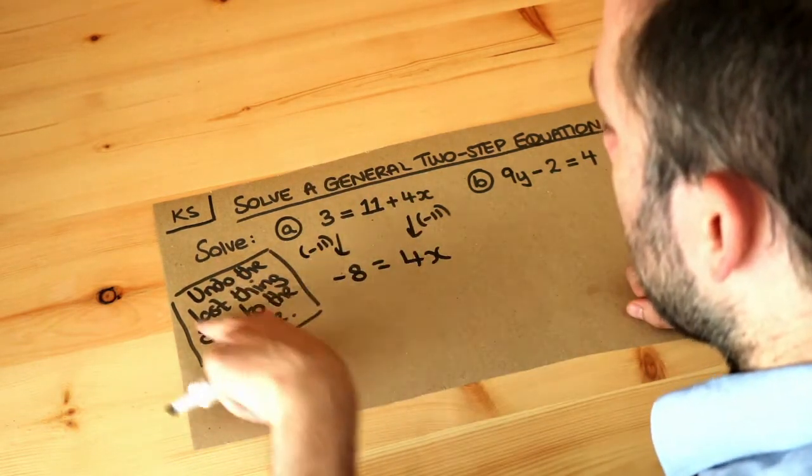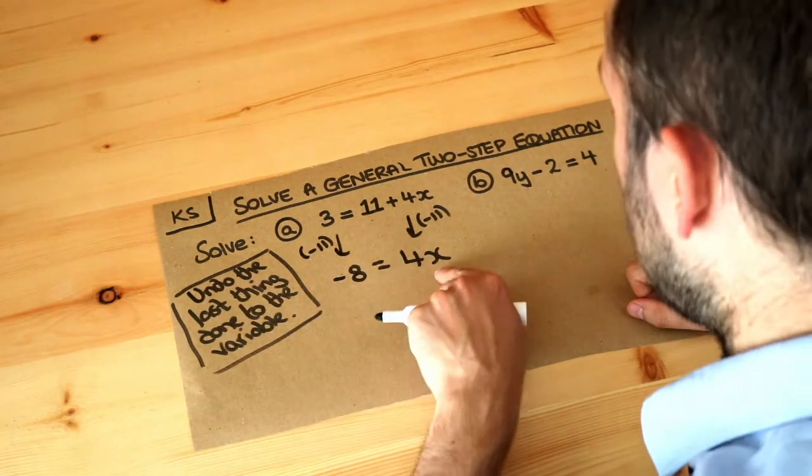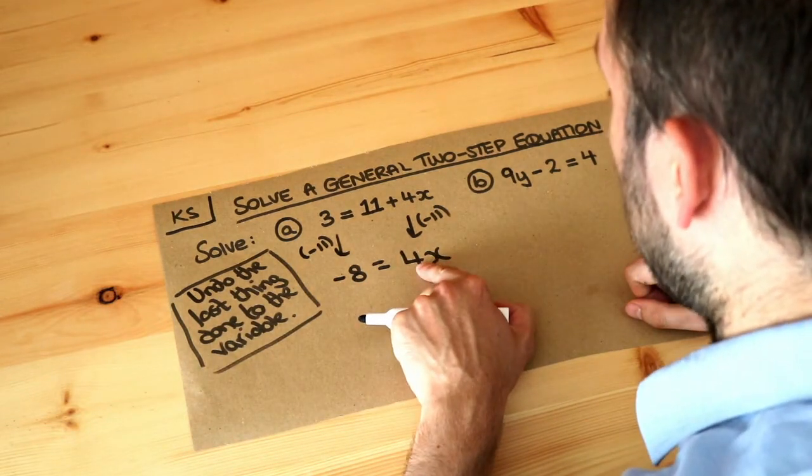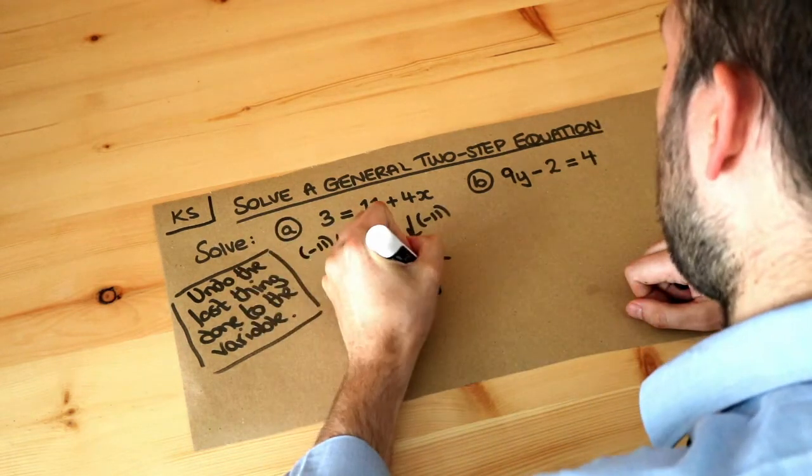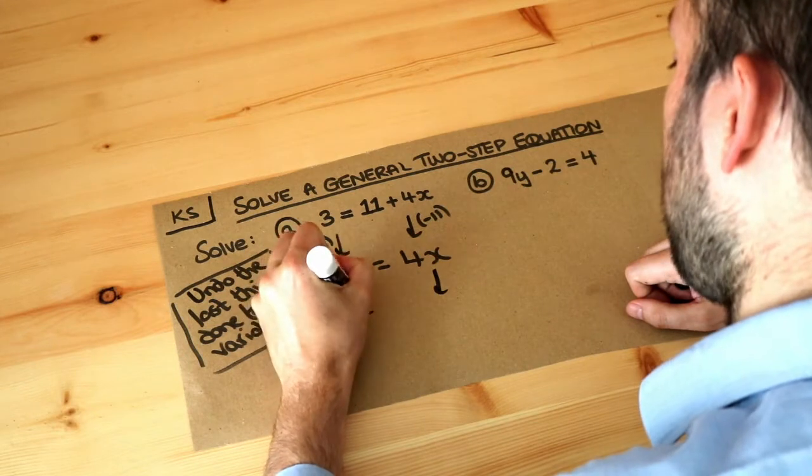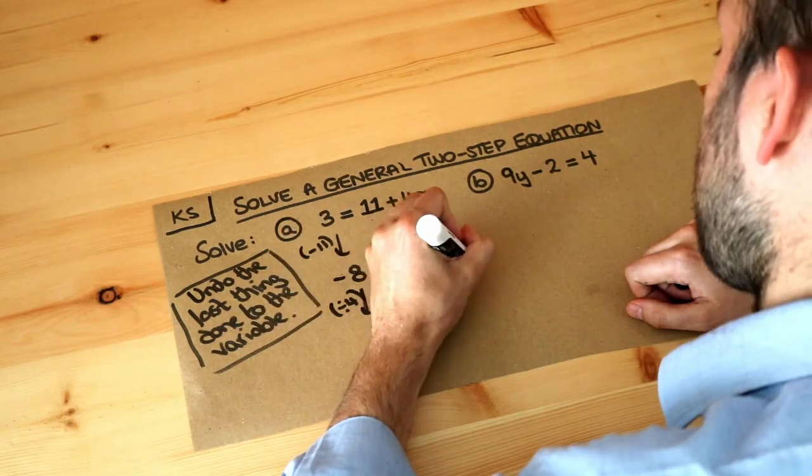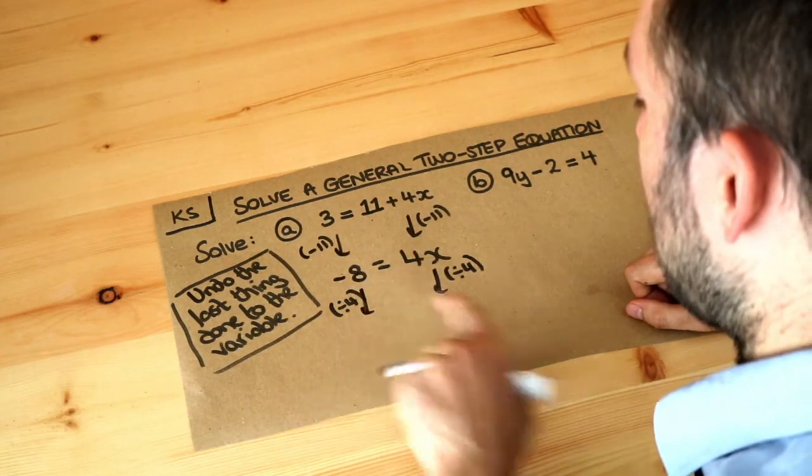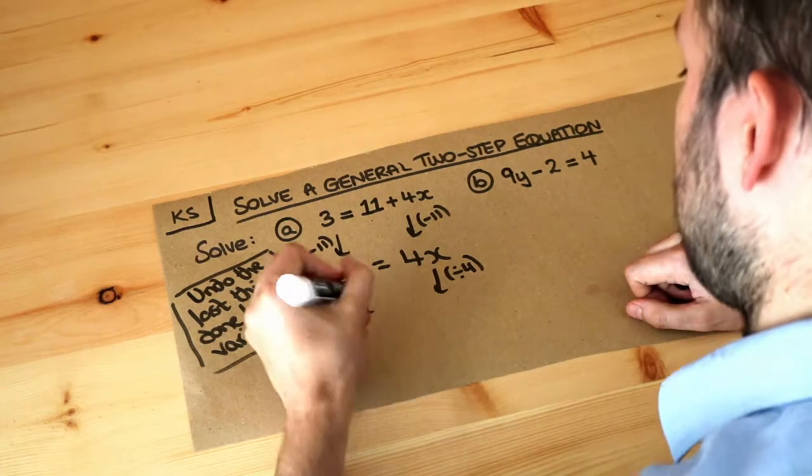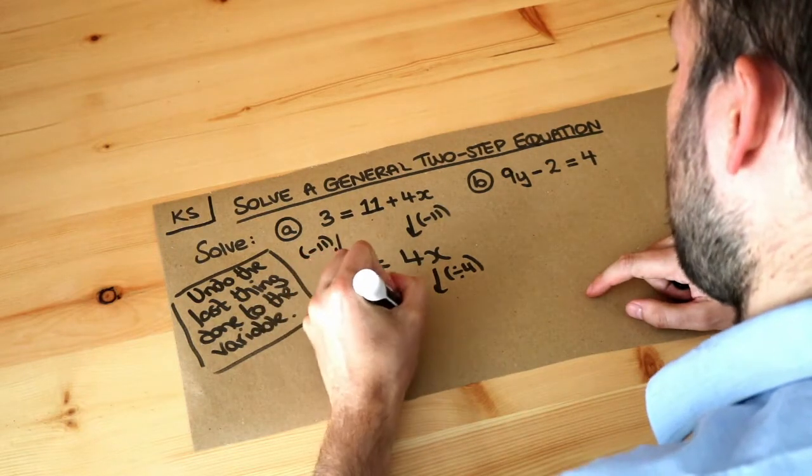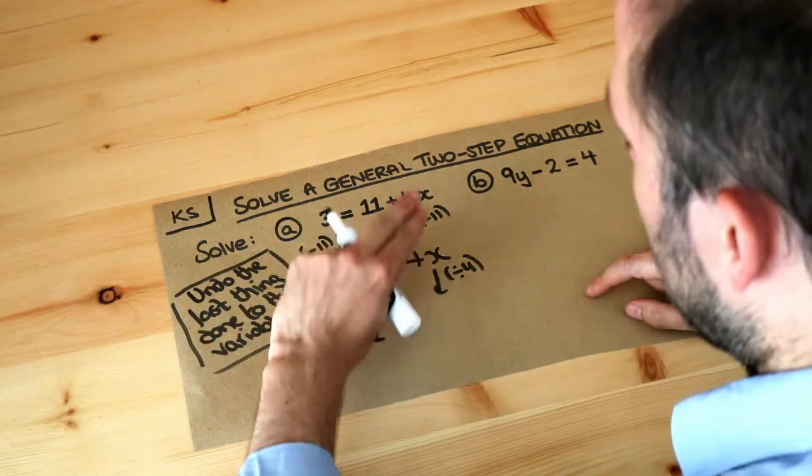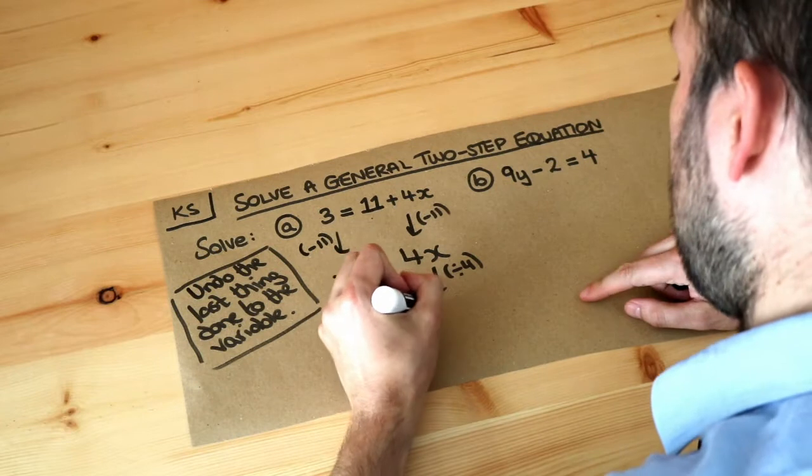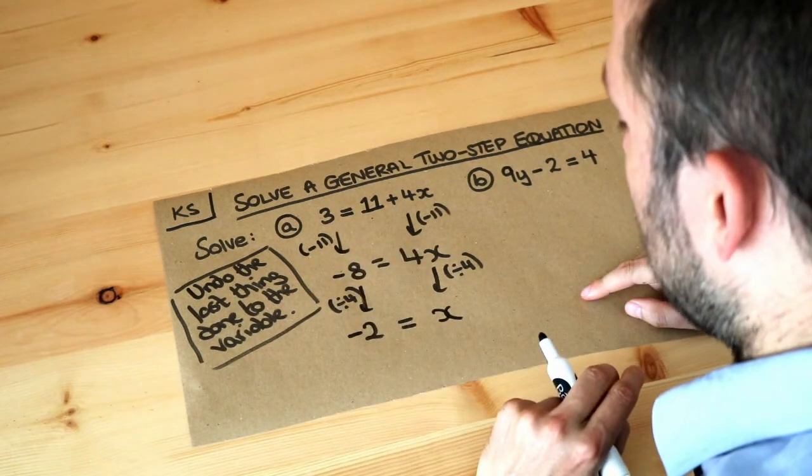And again we undo the last thing done to the variable. x is being multiplied by 4, we want to undo that times by 4, the opposite of times by 4 is dividing by 4. So when we divide minus 8 by 4, negative divided by positive is negative so it's negative 2, because 8 divided by 4 is 2. And 4x divided by 4, the divide by 4 just cancels out the times by 4 leaving just x. So x is minus 2.